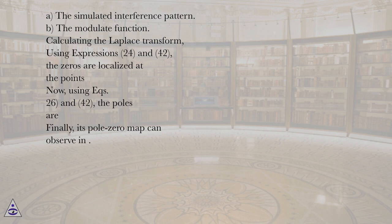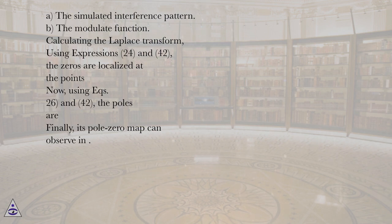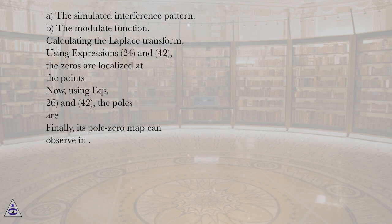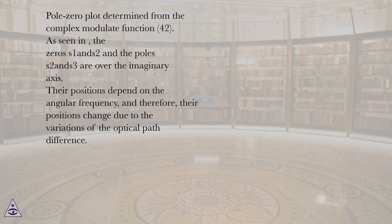Calculating the Laplace transform: using expressions 24 and 42, the zeros are localized at the indicated points. Now, using equations 26 and 42, the poles are determined. Finally, the pole-zero map can be observed. The pole-zero plot is determined from the complex modulate function, equation 42.